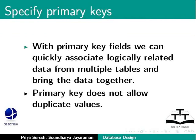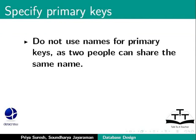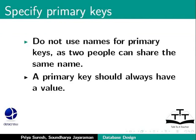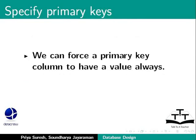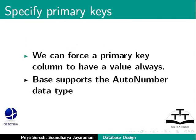We cannot have duplicate values in a primary key. For example, we cannot use people's names as a primary key because names are not unique — there can be two people with the same name in the same table. A primary key should always have a value; if it is empty or null, then we cannot consider it a primary key. We can force a primary key column to always have a value by setting the column's data type as an auto number, which Base will generate automatically.